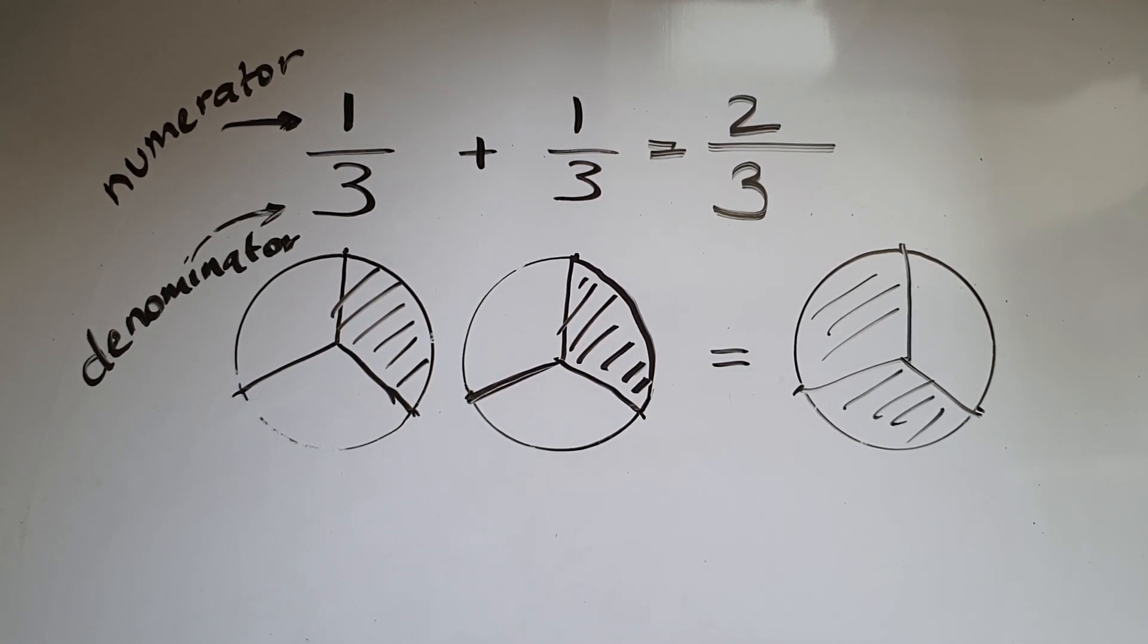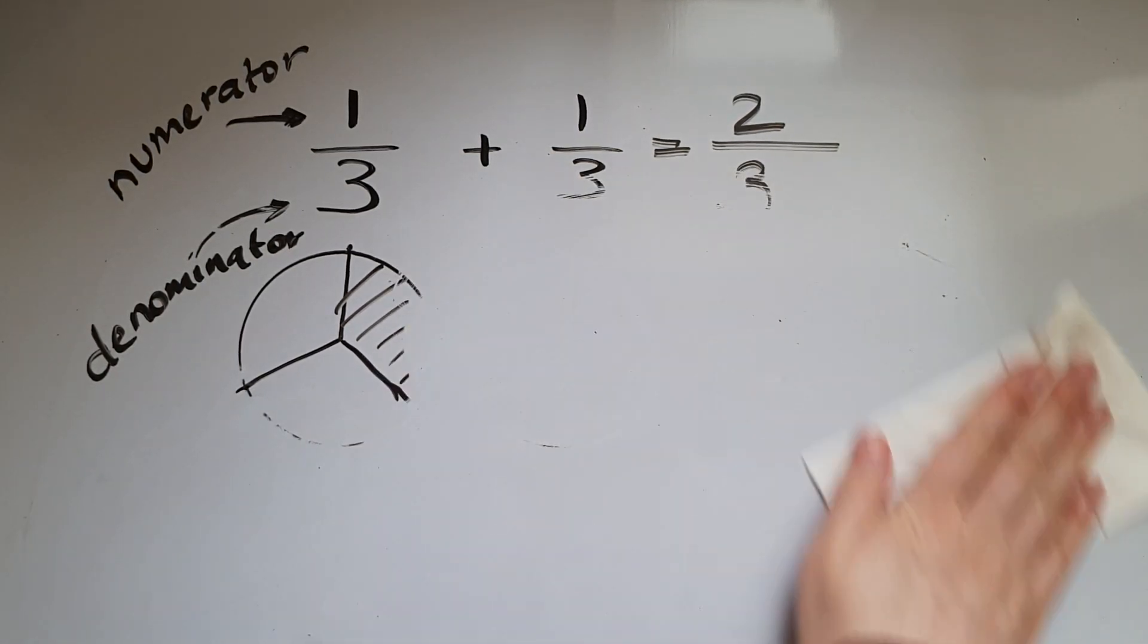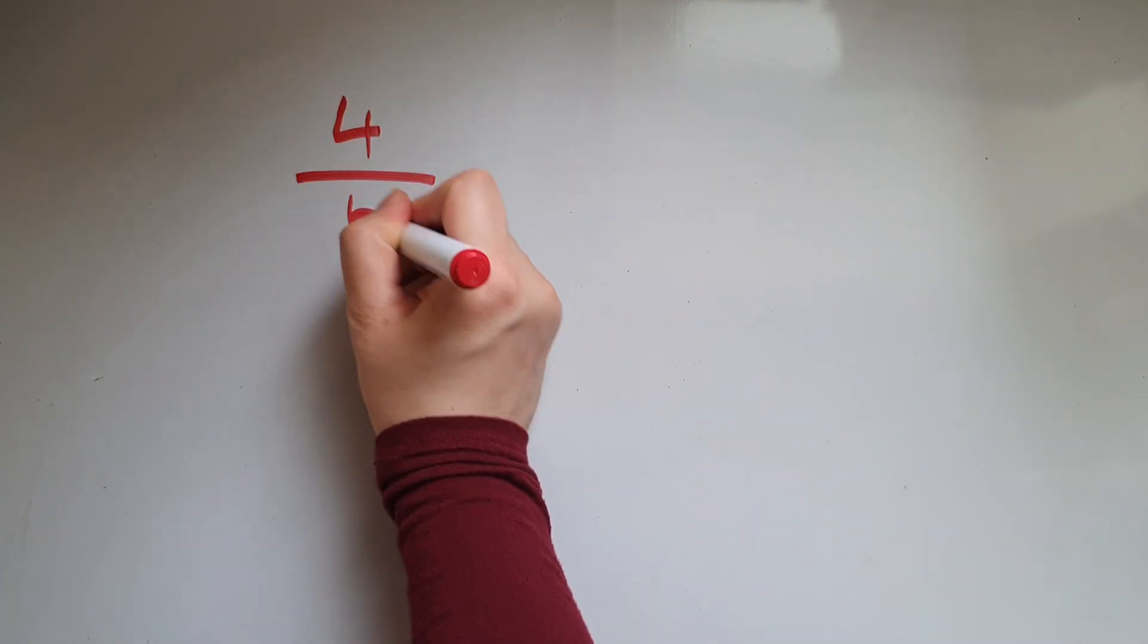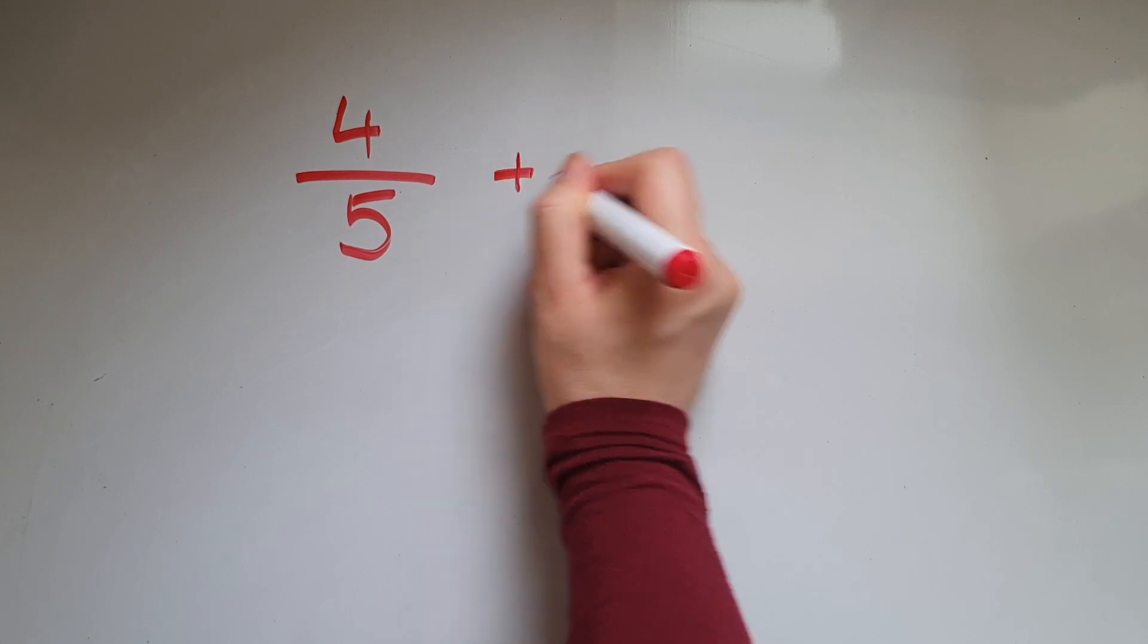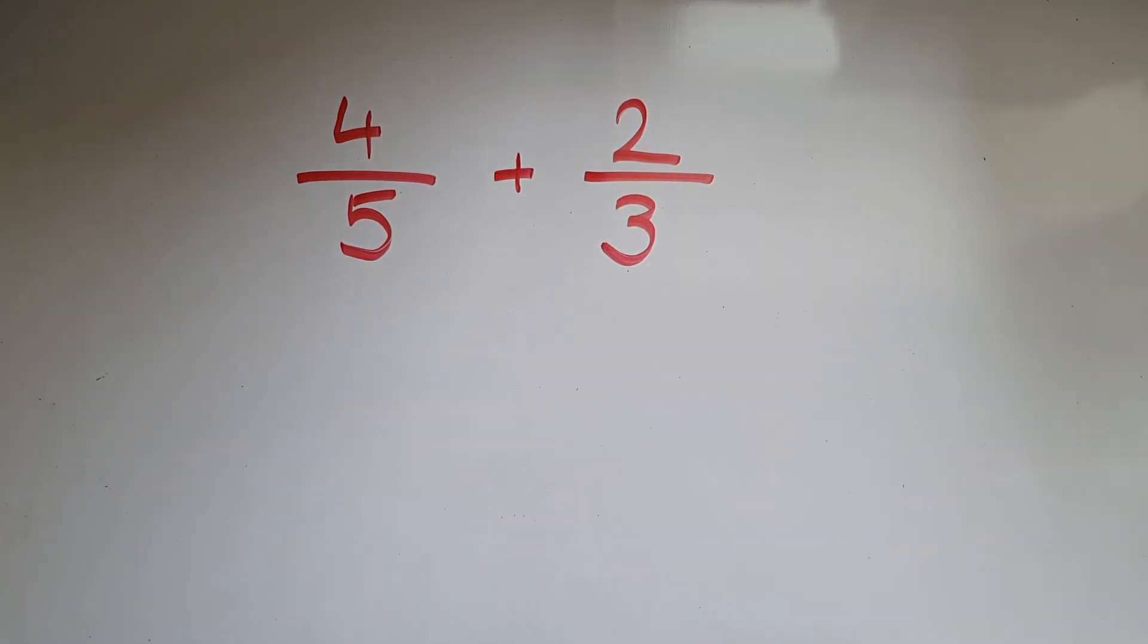Let's have a look at another two fractions which don't have the same denominator. So we're going to do 4/5 and 2/3. Rather than as the cake, I'm going to present them as chocolate bars.